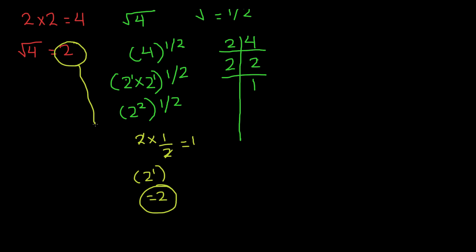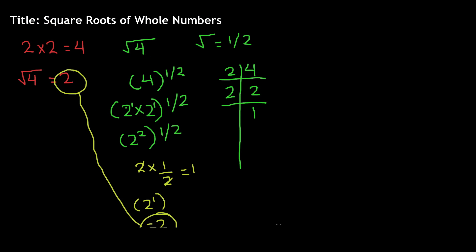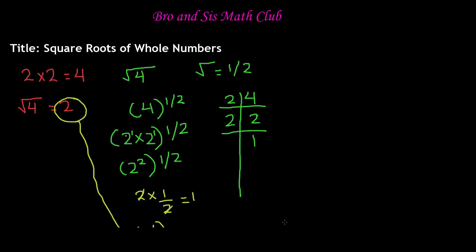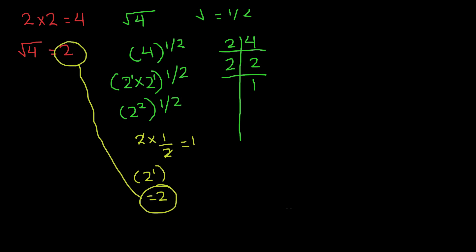So if we multiply 2 by itself — 2 times 2 — we get 4, and that is the square root of 4. So the square root of 4 is 2, and that is how we get it. I know this whole logical explanation might seem a little confusing, but if you go ahead and practice, it's really simple. Let's go ahead and do another example.